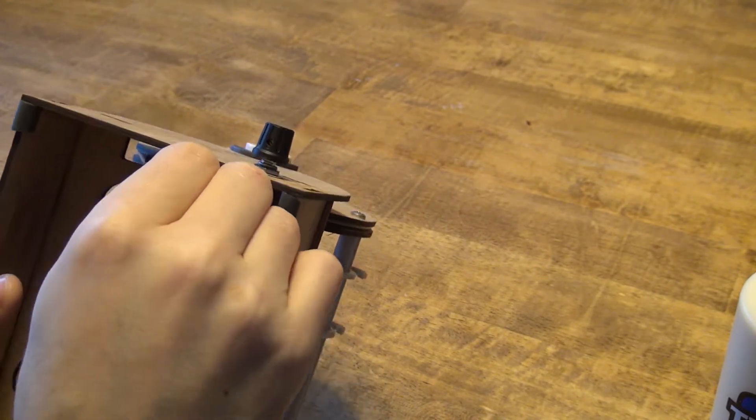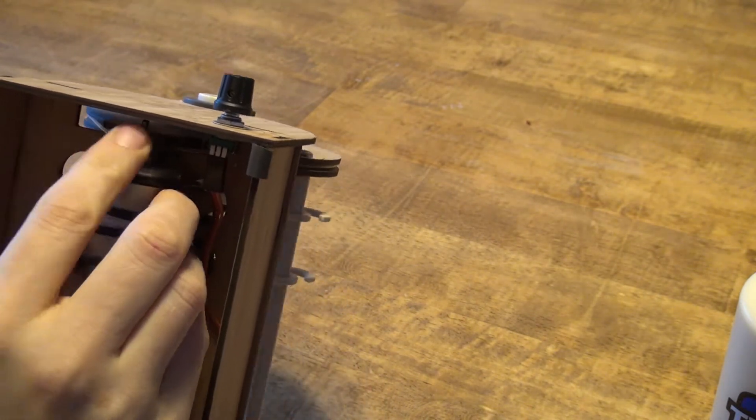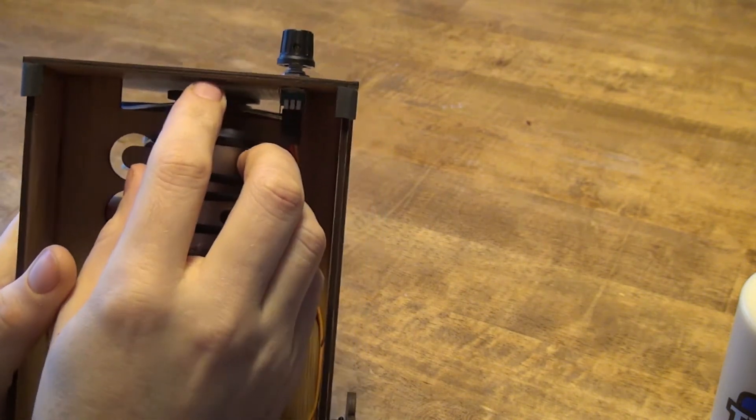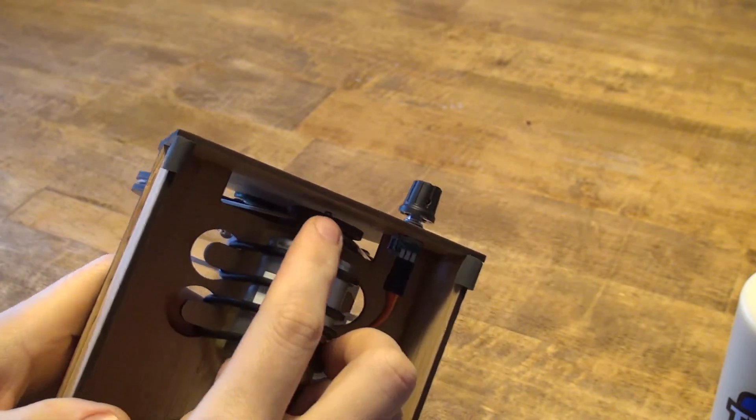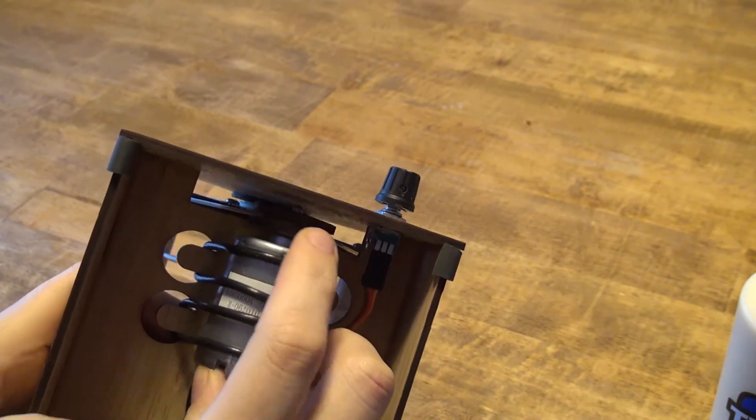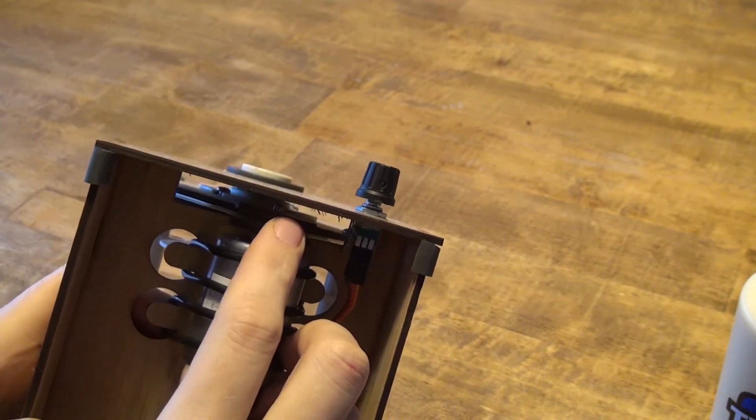That should not happen. That pulley should be firmly attached to the motor shaft there. If it's not firmly attached to the motor, then the glue there broke.